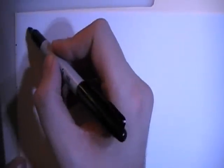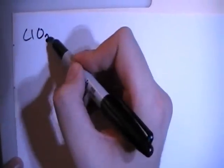Hey guys, in this video I'm going to show you how to draw the Lewis dot structure for the chlorite ion. So here we go. We have ClO2-, alright?